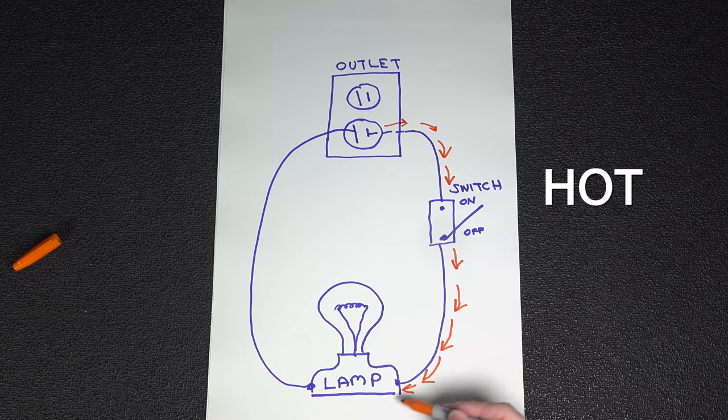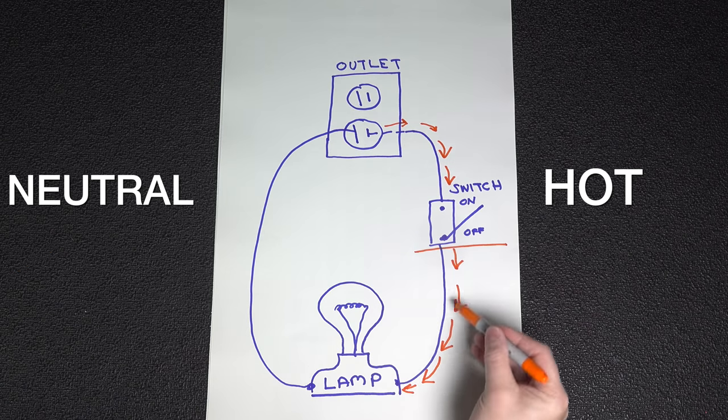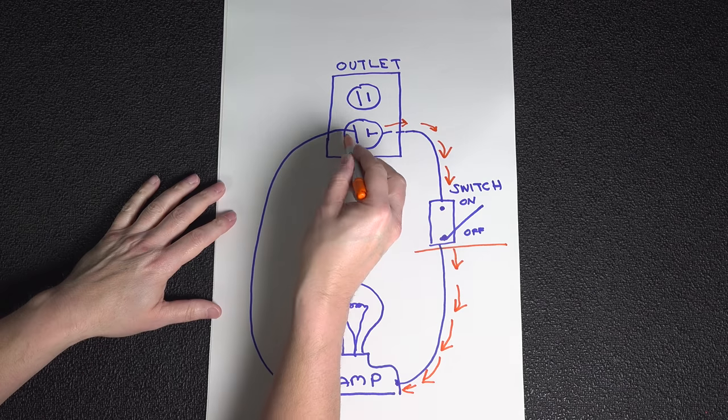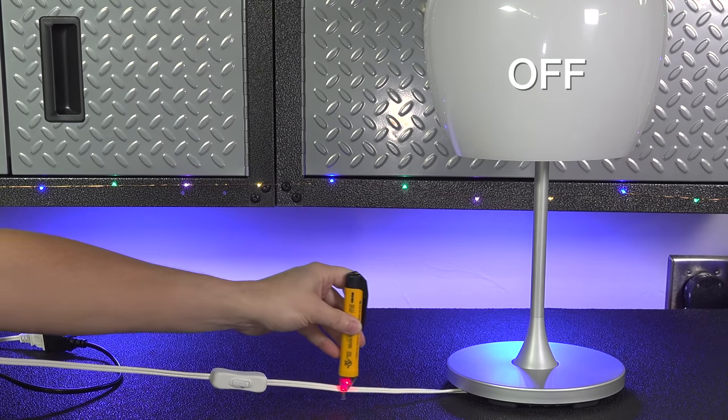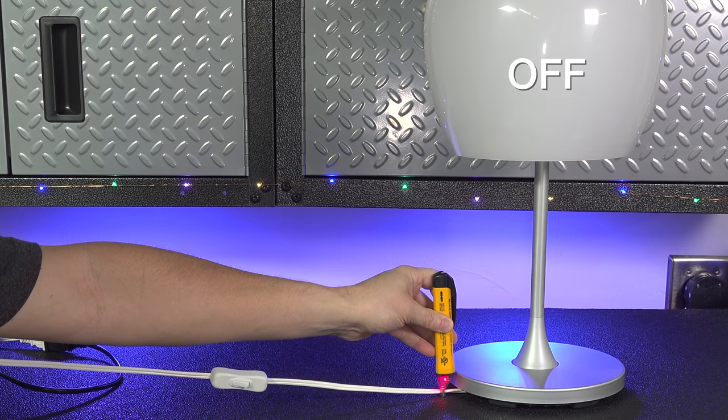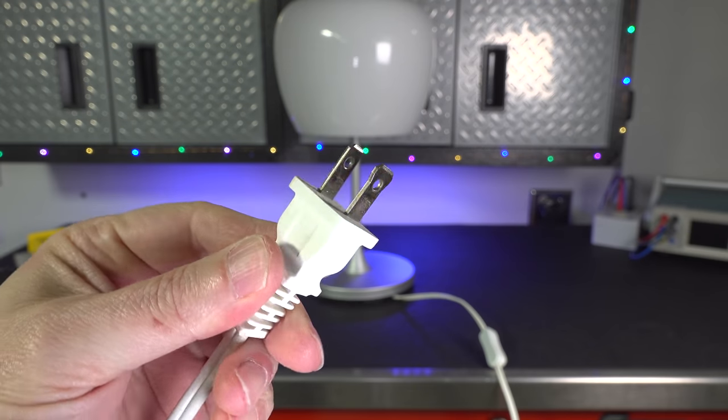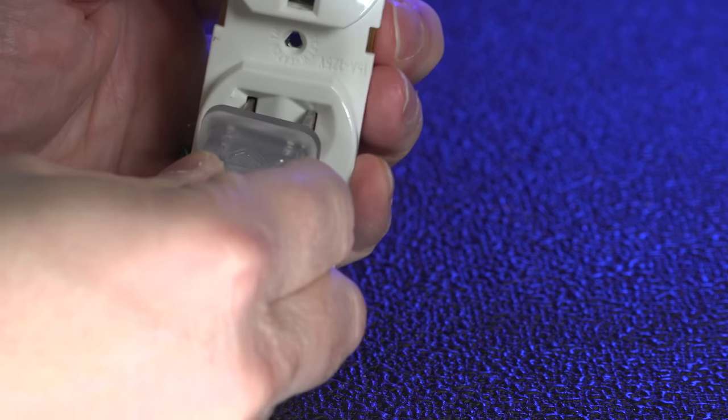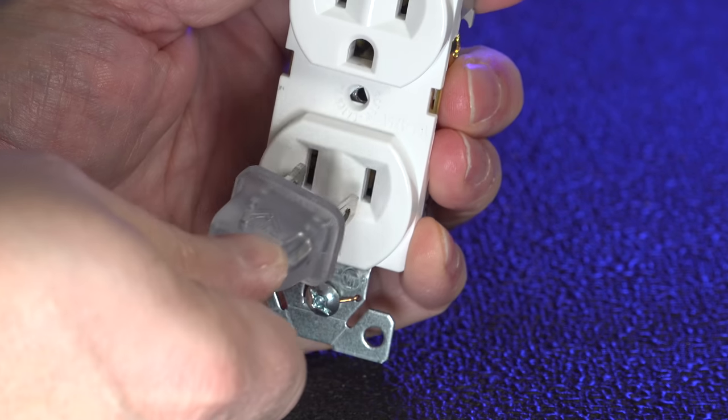But when we flipped it, we actually had the electricity now going through the line of the neutral into the appliance and then into the switch. This creates a very unsafe situation and it's kind of like driving the wrong way on the freeway. By using a polarized plug, a manufacturer can guarantee that the circuit will be completed correctly and the hot and the neutral will end up in the right place.